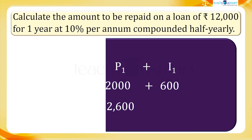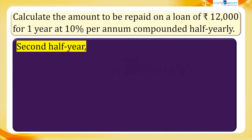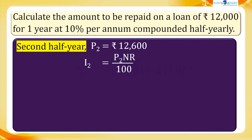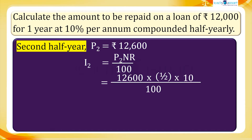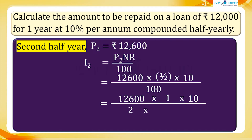So for the second half year, principal P2 equals 12,600 rupees. Therefore, interest for the second half year, I2 equals P2 × n × r divided by 100, equals 12,600 multiplied by 1 multiplied by 10, the whole divided by 2 multiplied by 100.